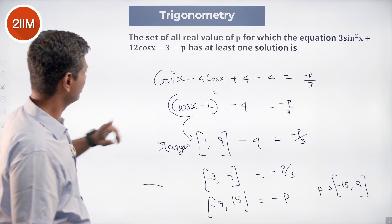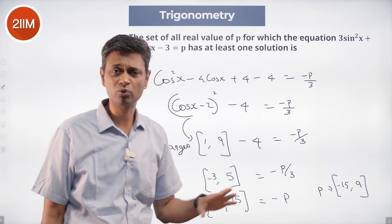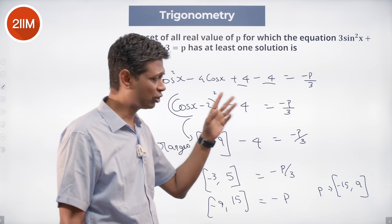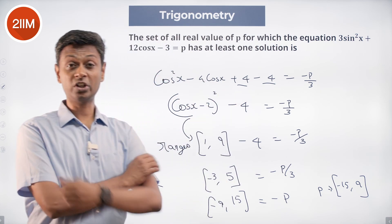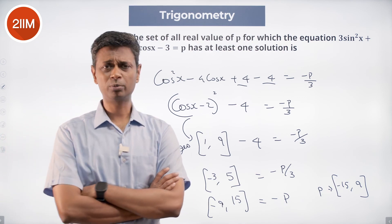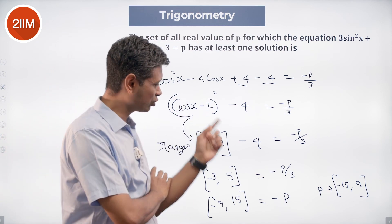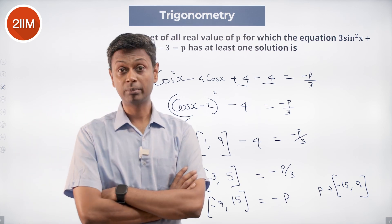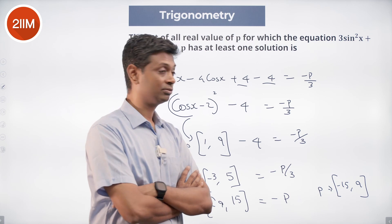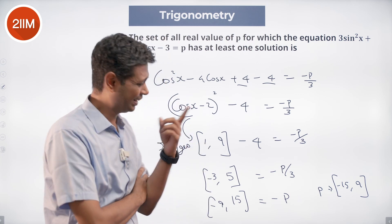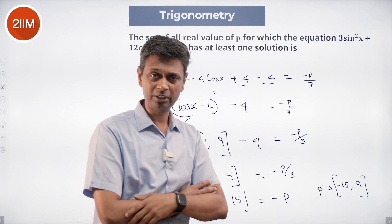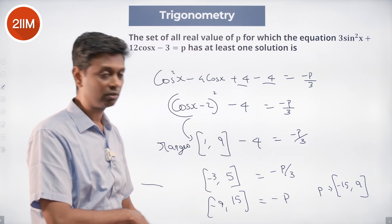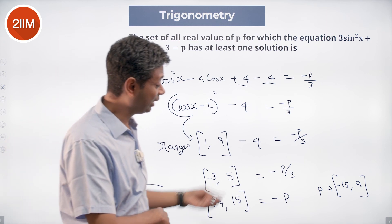Completing the square gives cos²x - 4cosx + 4 = (cosx - 2)². We write (cosx - 2)² - 4 = -p/3, adding and subtracting 4. Since cosx goes from -1 to +1: (-1 - 2)² = 9 and (1 - 2)² = 1, so (cosx - 2)² ranges from 1 to 9. Subtracting 4 gives a range of -3 to 5, which equals -p/3. Multiplying by 3, -p ranges from -9 to 15.